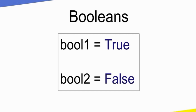Next, booleans. Booleans are two values: true and false. We use booleans in if-else statements — if something is true or false. To the computer, it is 0 or 1: 0 is false, 1 is true. Booleans are simply true or false.